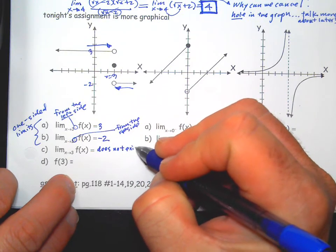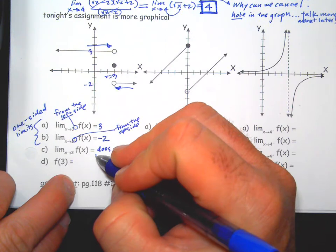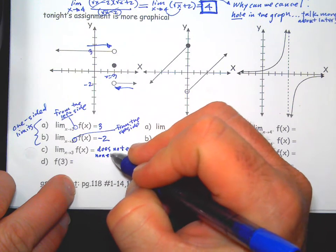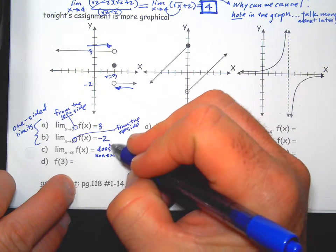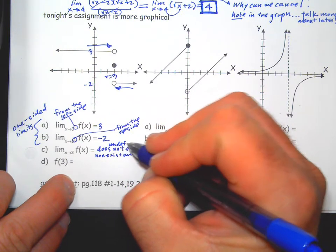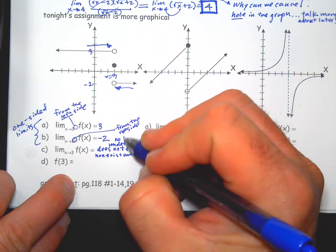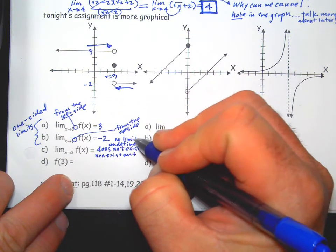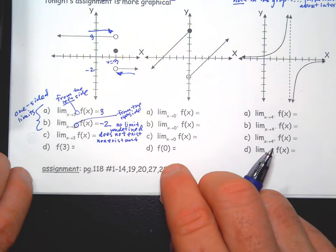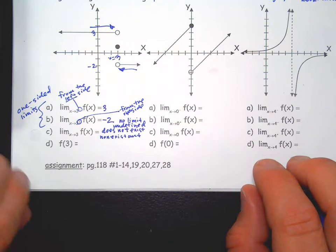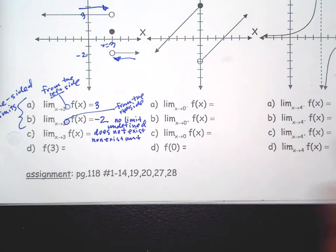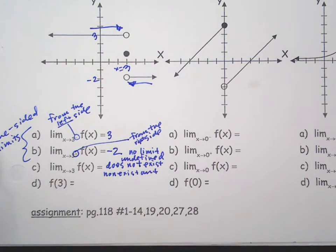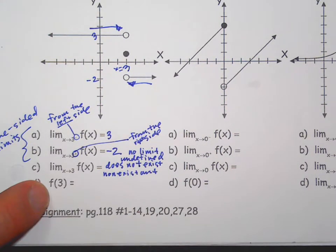There's one thing you can say, or you can say non-existent, or you can say undefined, or you can say no limit, because the two sides disagree. Right? It's like your parents don't agree, so there is no limit.